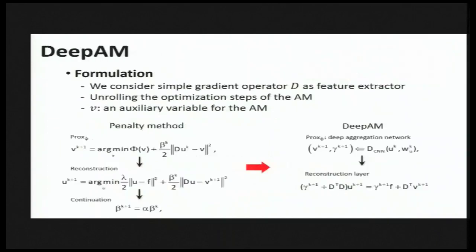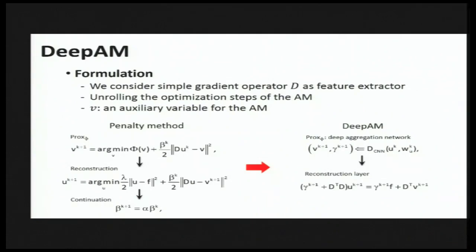We reformulate the iteration of the classical penalty method as follows. The penalty parameter is completely absorbed into the CNN. This reformulation allows us to turn the optimization procedure in the penalty method into a cascaded neural network architecture, which can be trained by standard backpropagation algorithms.